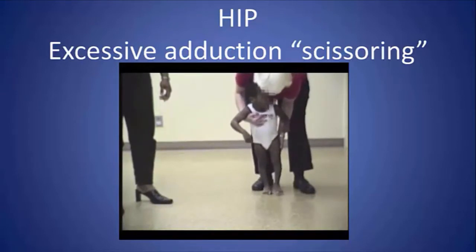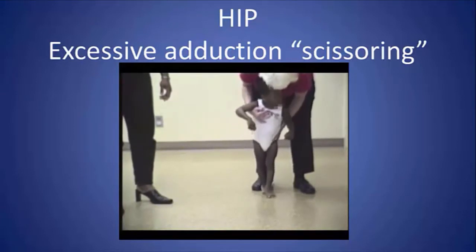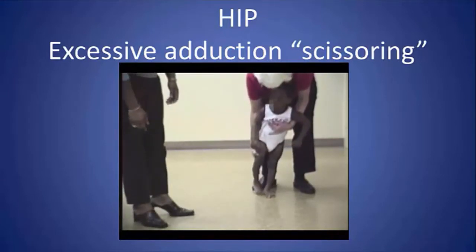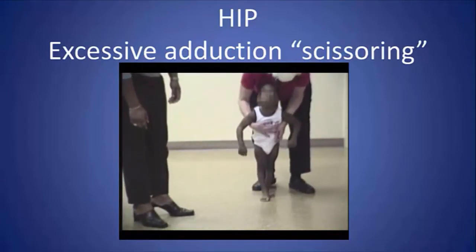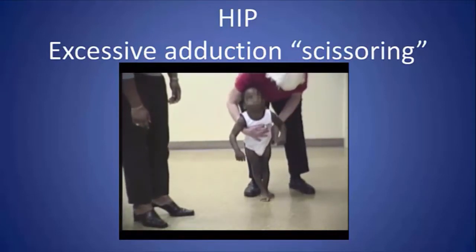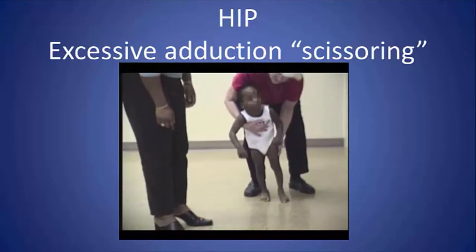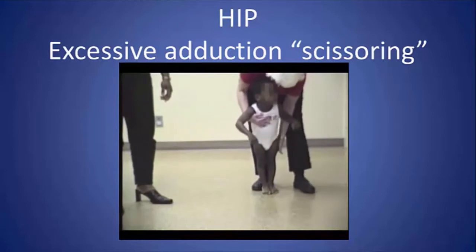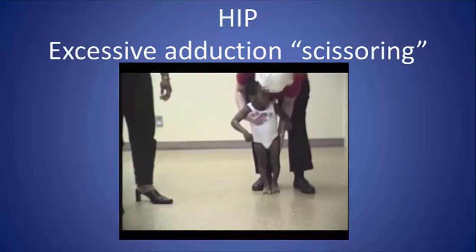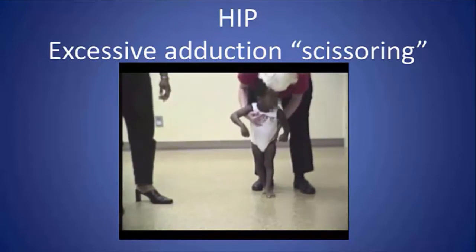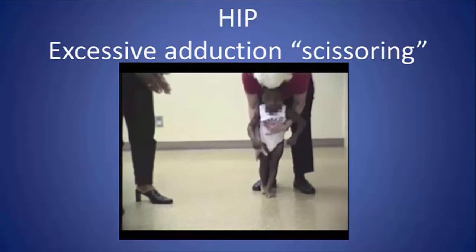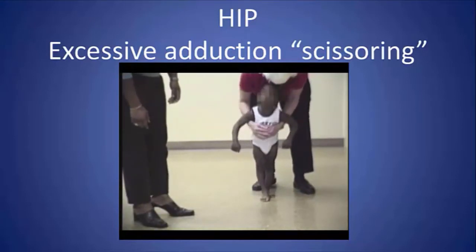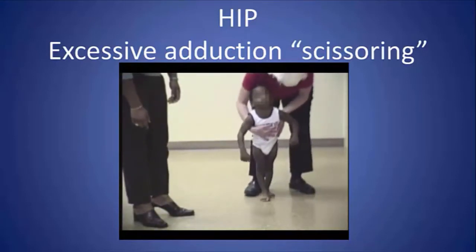Although he is standing with a little bit of support, he really can't move his legs — not only is it difficult to get one in front of the other because they're so tightly adducted, but the adductors are basically locking the femur to the pelvis so that he can't overcome this with his other muscles in order to ambulate.